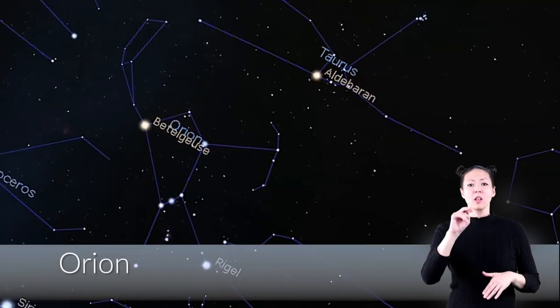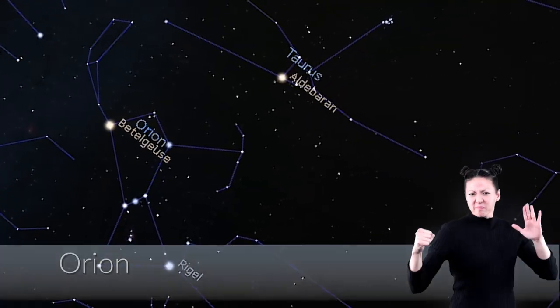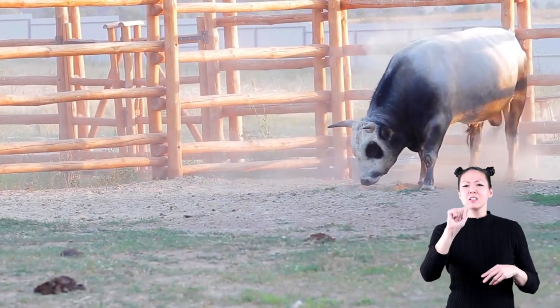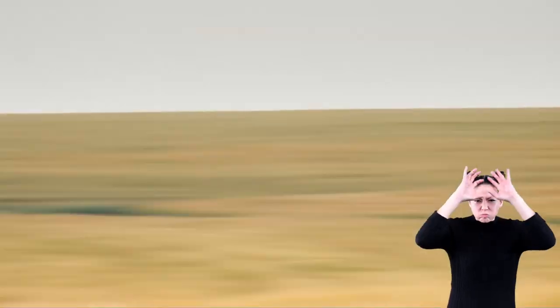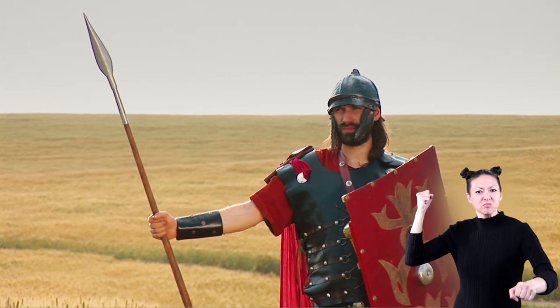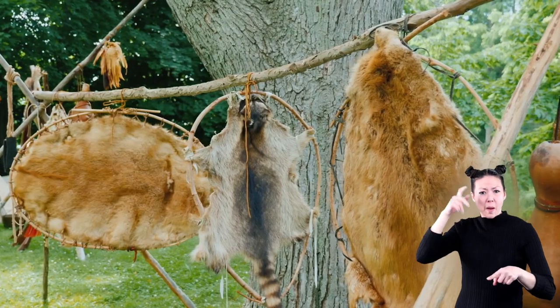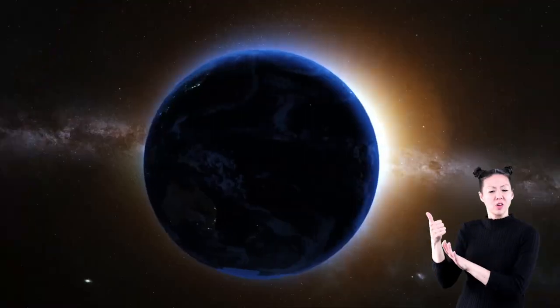Orion looks like he is defending himself from a nearby constellation called Taurus the Bull. Orion is holding a club or weapon in one hand and a lion pelt in the other. This constellation is visible throughout the world.